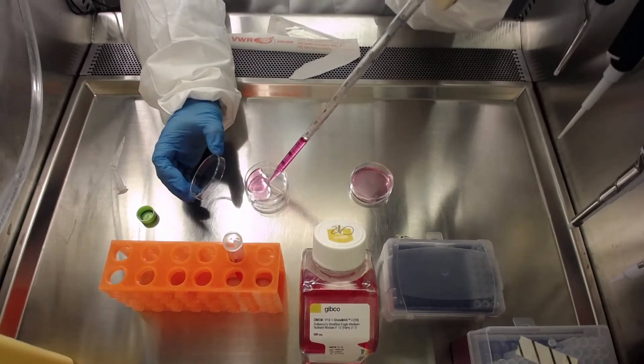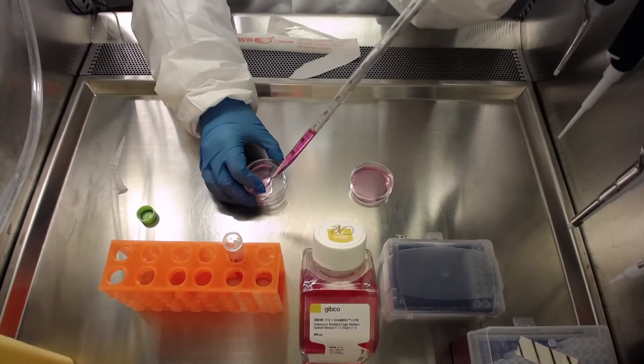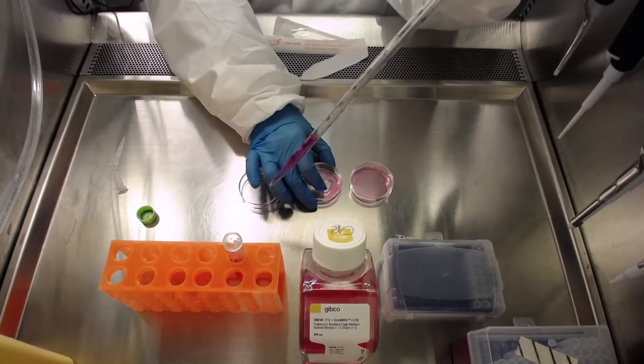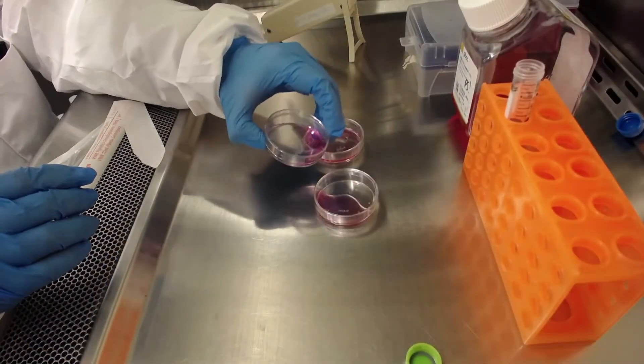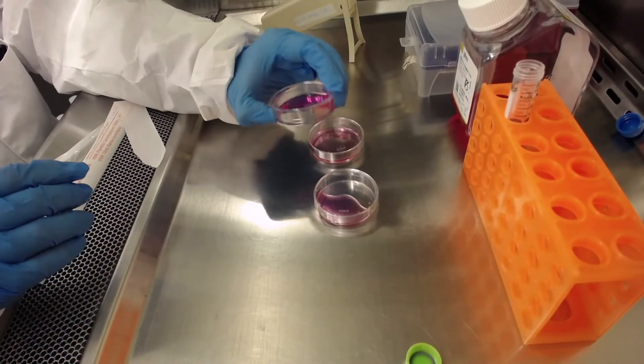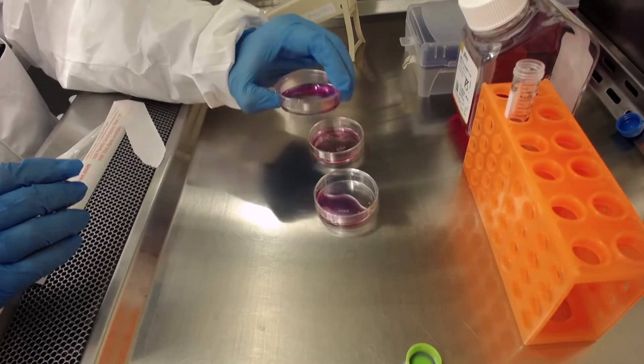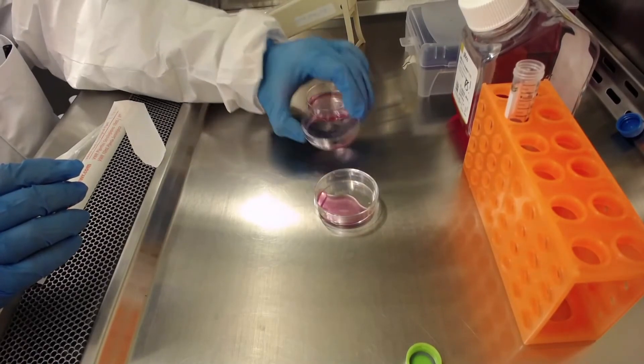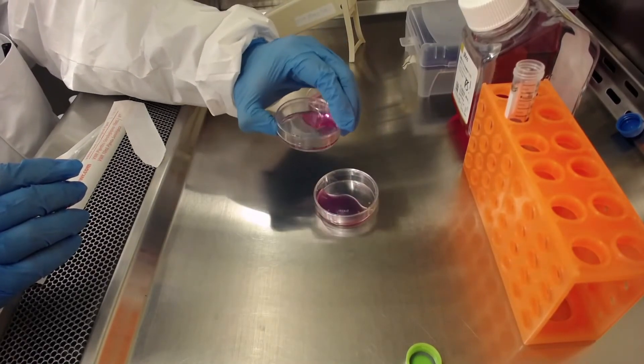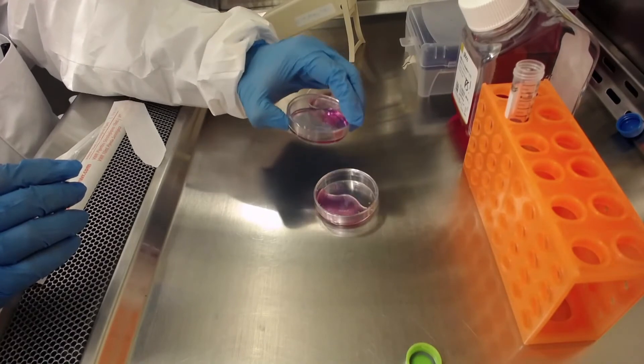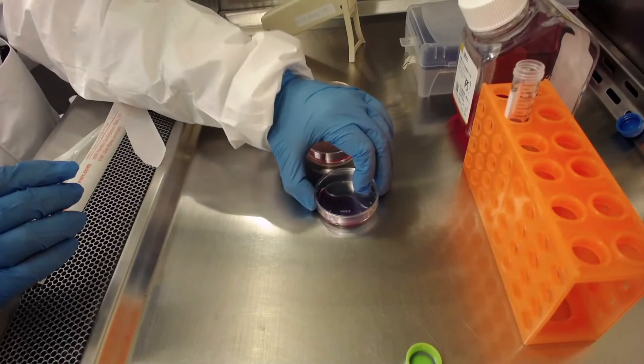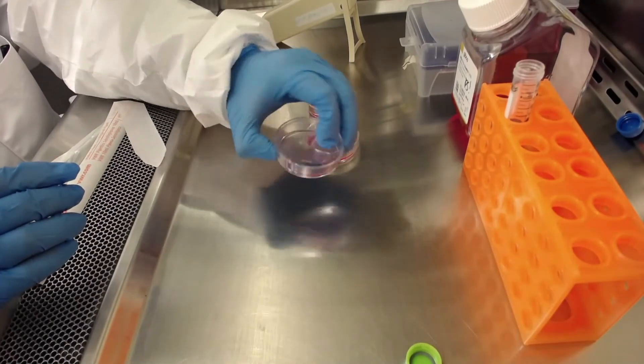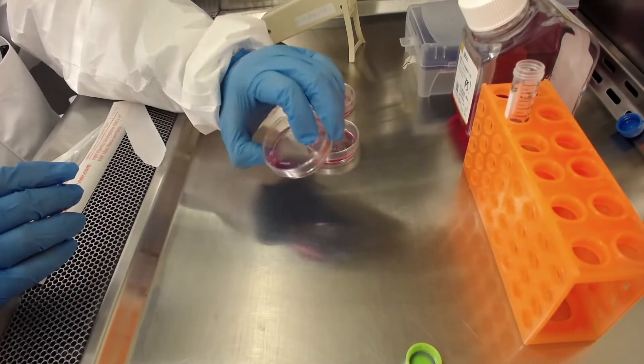If using a 10 cm dish, add 5 ml per dish. Swirl and rock the dish to ensure even coating. Make sure there are no dry spots and that the solution is evenly distributed. Improper coating will prevent proper cell attachment to the surface of the dish.